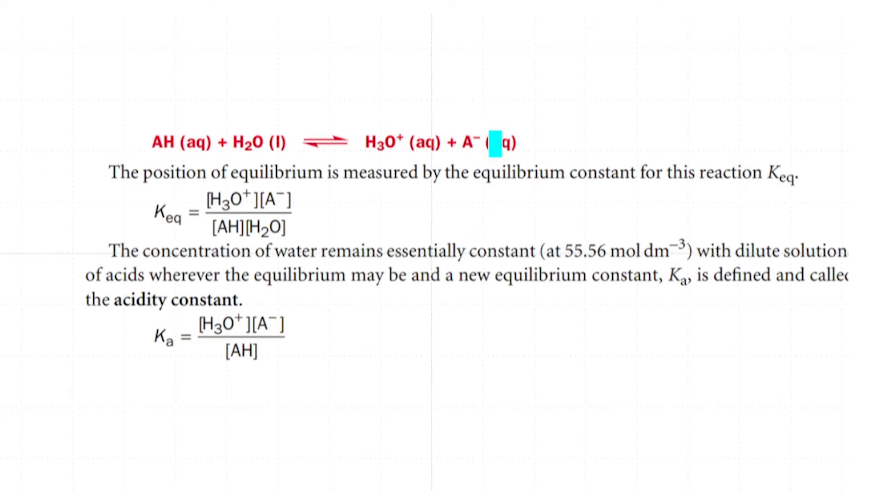The way we would experimentally determine the stability is to measure the equilibrium constant. The equilibrium constant is nothing but the concentration of H3O+ multiplied by the concentration of the conjugate base divided by the concentration of the acid and water. The conjugate base stability is the primary or the most important factor for determining the strength of an acid.